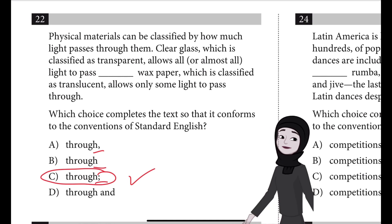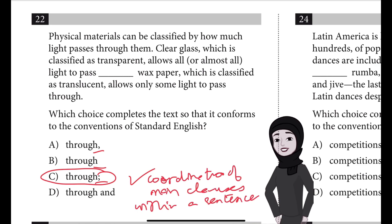The convention being tested is the coordination of main clauses within a sentence. The choice uses a semicolon in a conventional way to join the first main clause. The first main clause is from 'clear glass' and we fill it with 'through.'